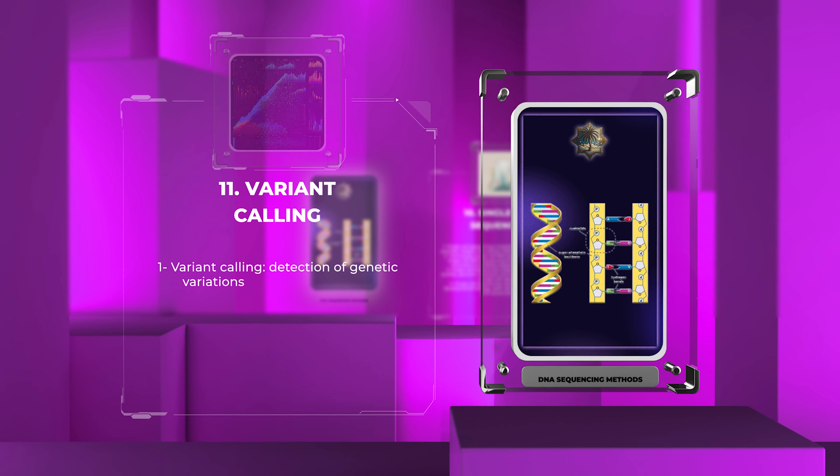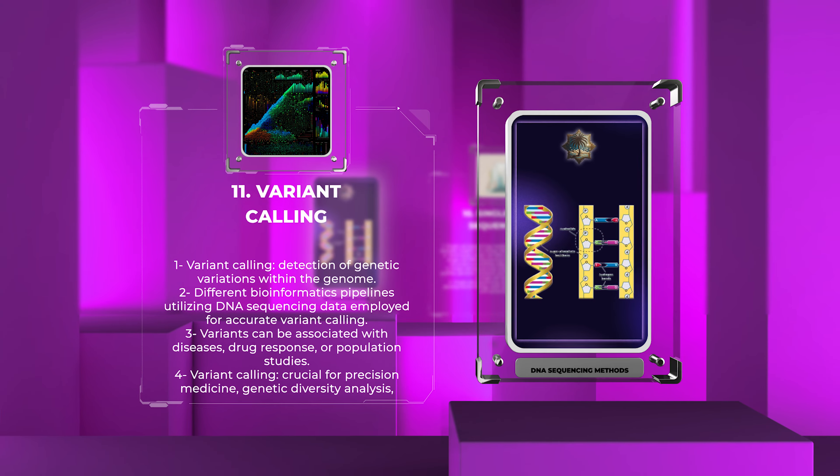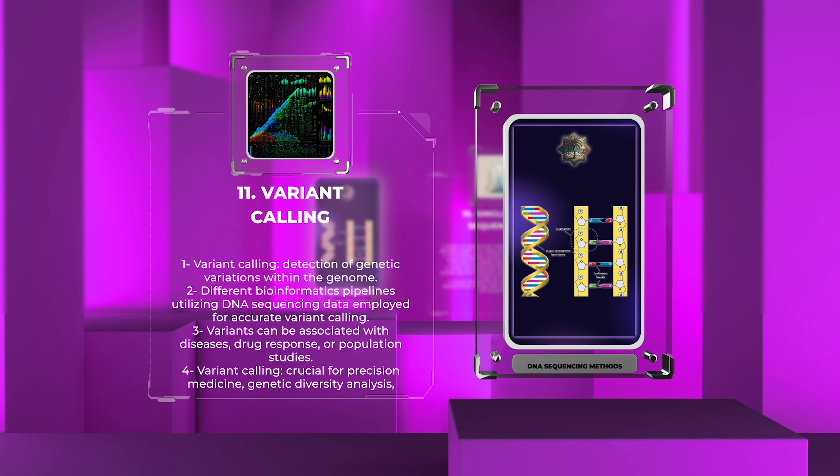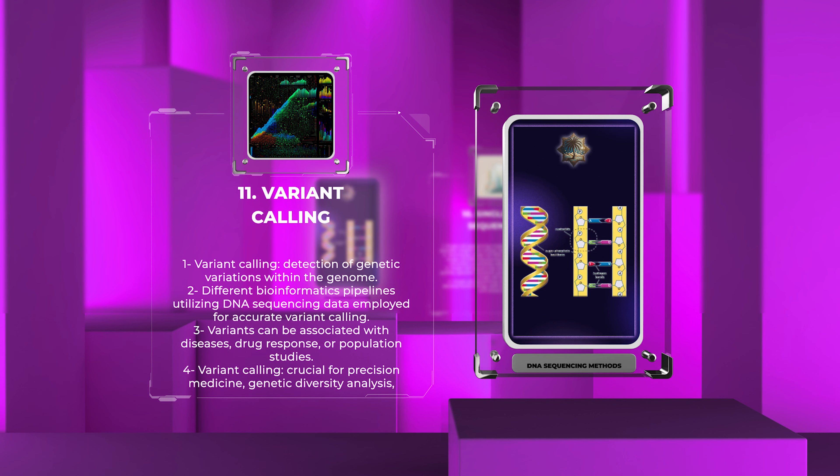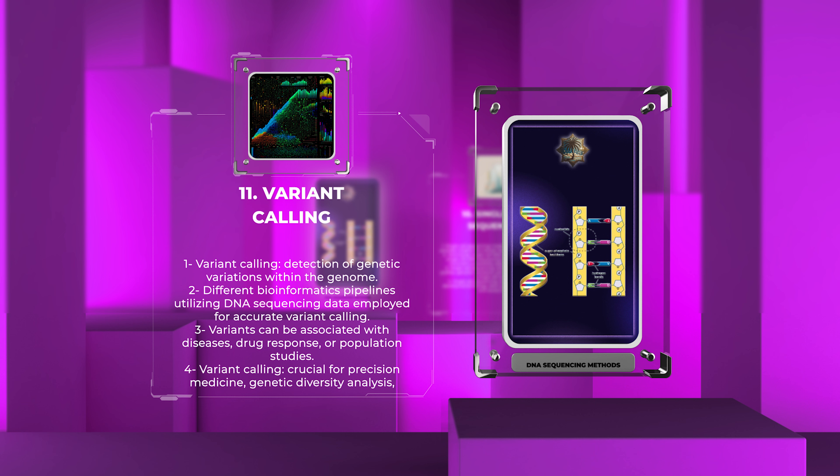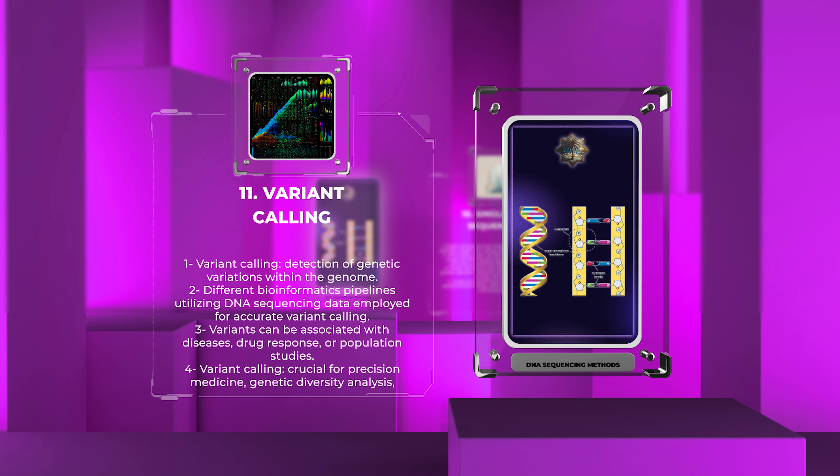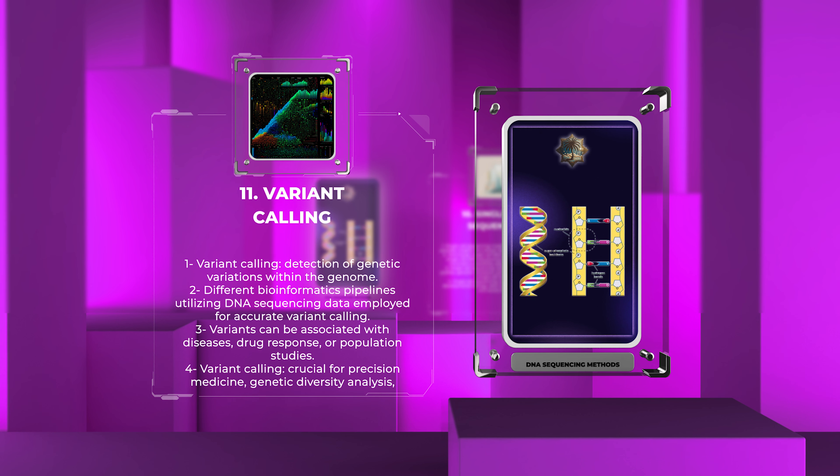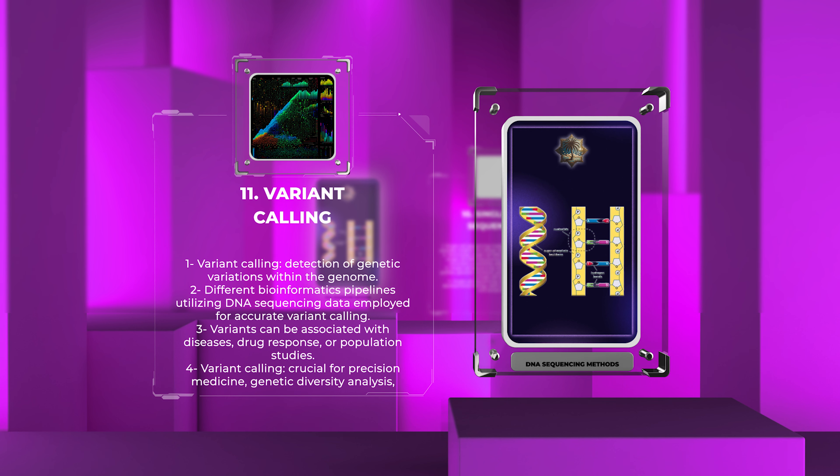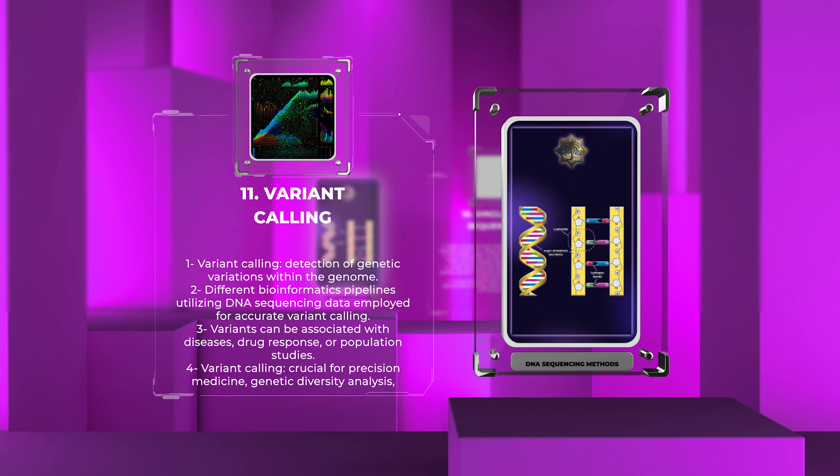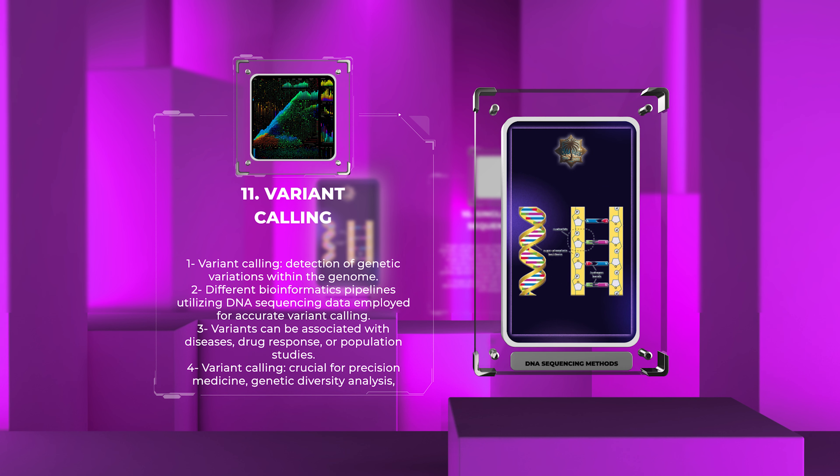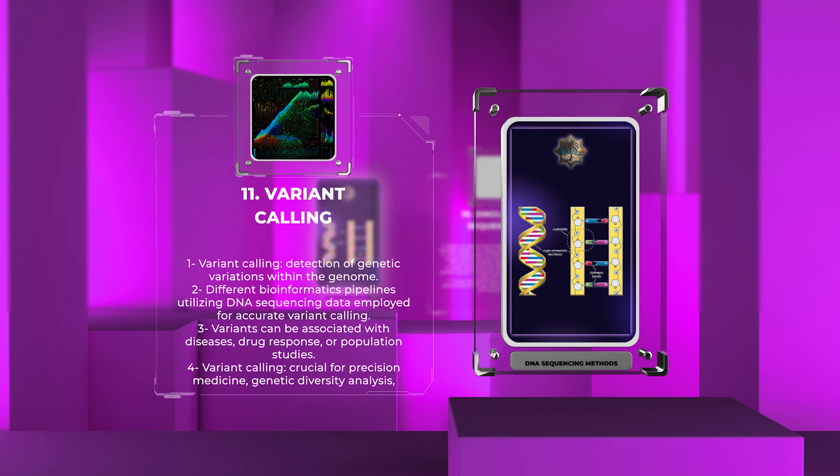Variant calling involves the detection of genetic variations, such as single nucleotide polymorphisms, SNPs, insertions, deletions, or structural variations within the genome. Different bioinformatics pipelines, utilizing DNA sequencing data, are employed to perform variant calling accurately. Variants can be associated with diseases, drug response, or population studies. Variant calling plays a crucial role in precision medicine, genetic diversity analysis, and understanding the genetic basis of diseases.